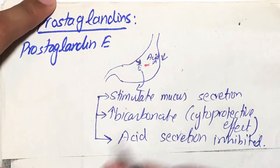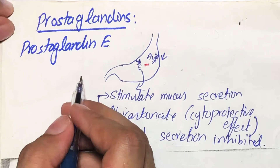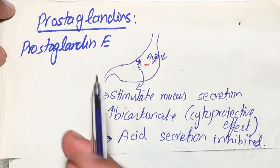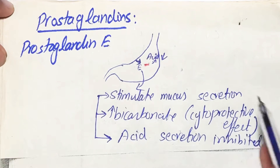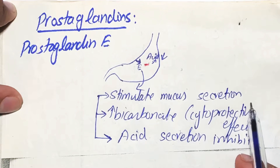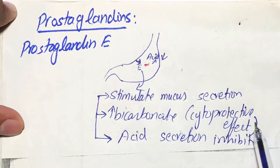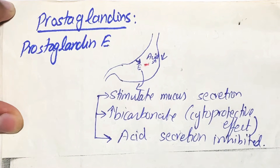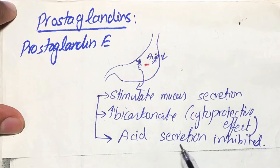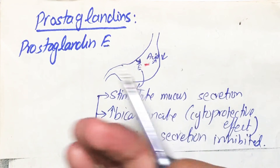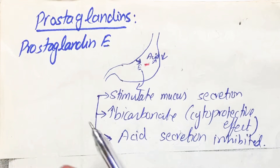All of these effects are beneficial, but what happens when there is a deficiency of prostaglandins? Obviously there will be no secretion of mucus, there will be less bicarbonate present, and there will be an increase of acid secretion.